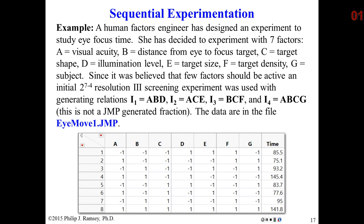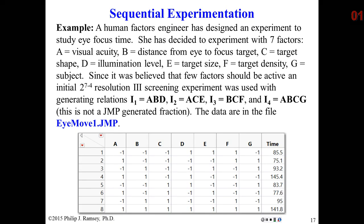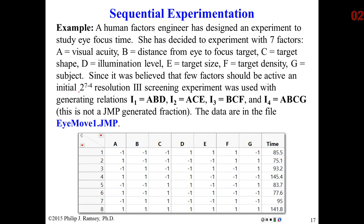So, they have seven factors, so a full 2 to the 7th would be 128 runs. There are a list of the seven factors, and the experimenter decided to go with a 2 to the 7 minus 4, a 16th of the 128 total runs, and this is a resolution 3 design, so main effects are aliased with one or more two-way interactions.